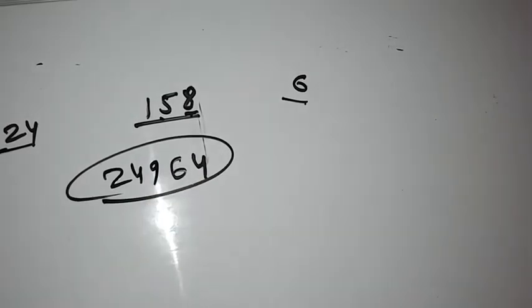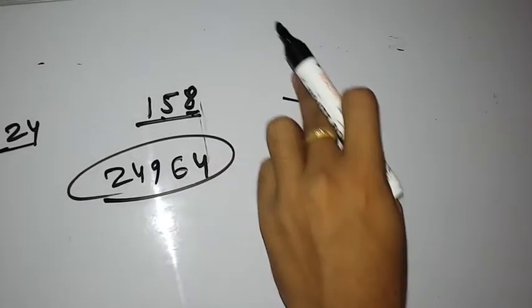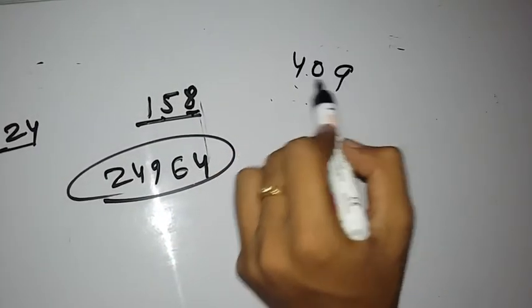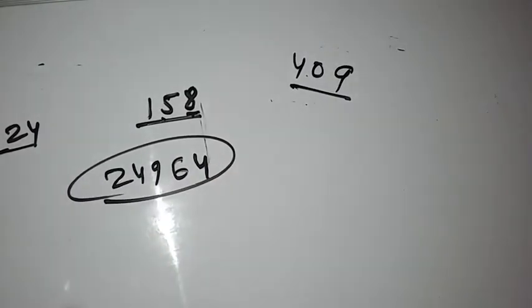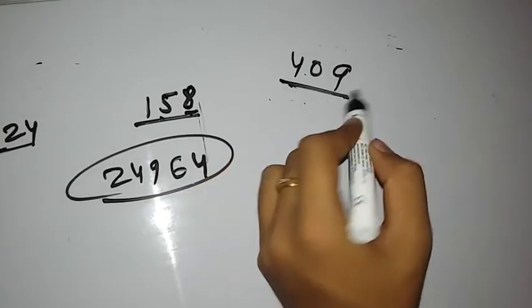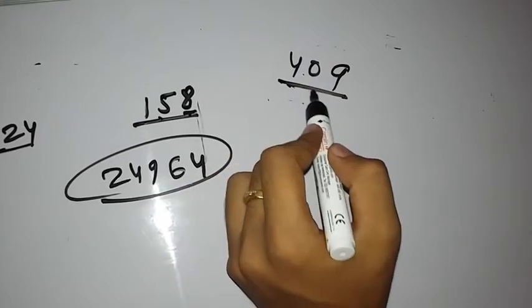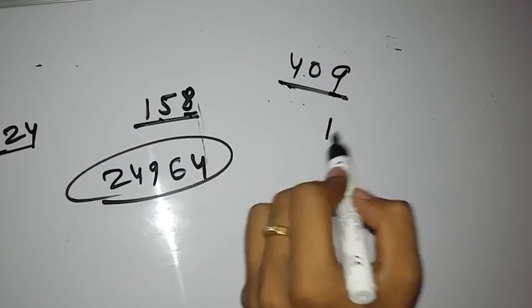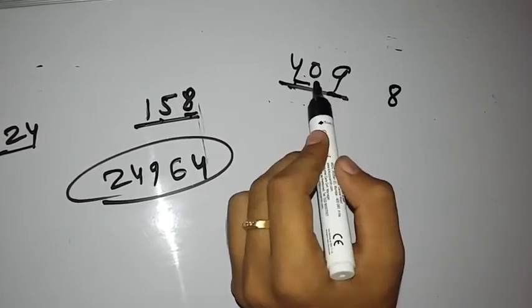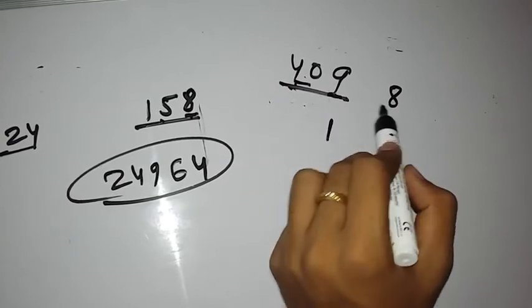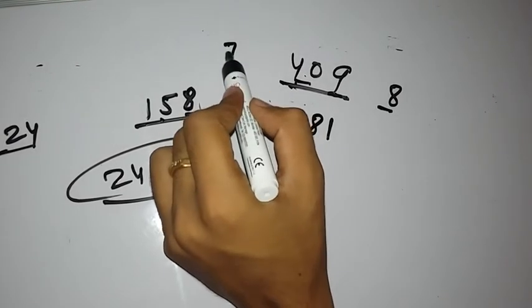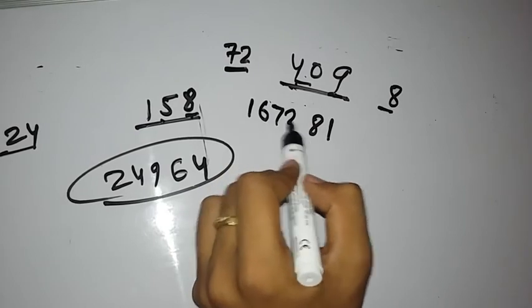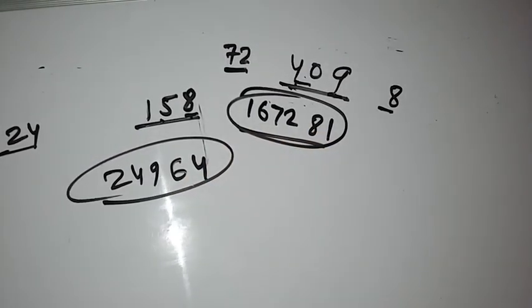That is the answer for square of 158. This method will work for 200, 300, even 409. For example, 409 square: 9 square is 81, write 1 and carry 8. 40 times 9 equals 360, double it to get 720. 720 plus 8 equals 728, write 8 and carry 72. 40 square is 1600, 1600 plus 72 equals 1672. So that is the square of 409.